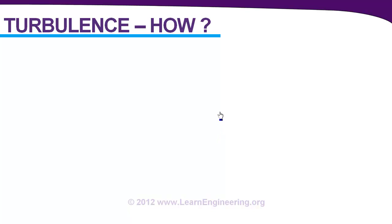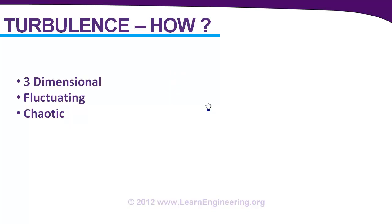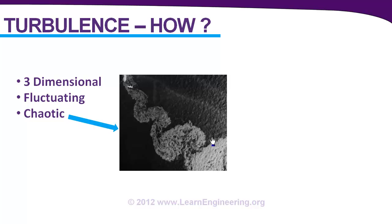The first step: how can we recognize whether a flow is turbulent or not? There are three characteristics for a turbulent flow. Turbulent flows are always three-dimensional in nature, they are always fluctuating, and they are always chaotic — meaning the flow is full of eddies and wakes.